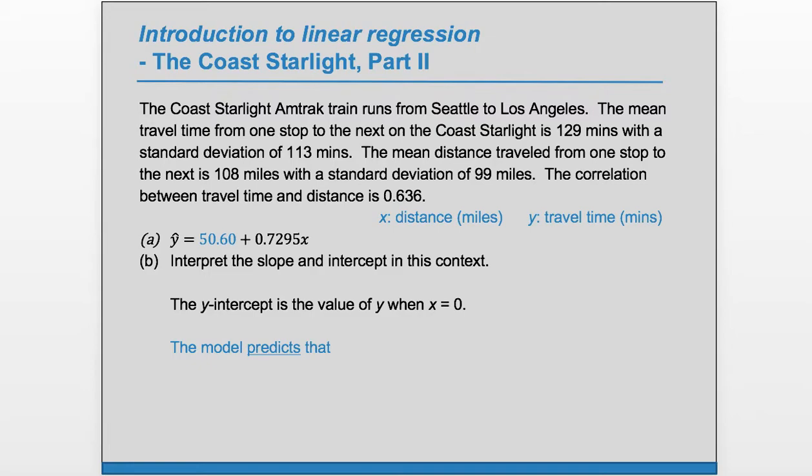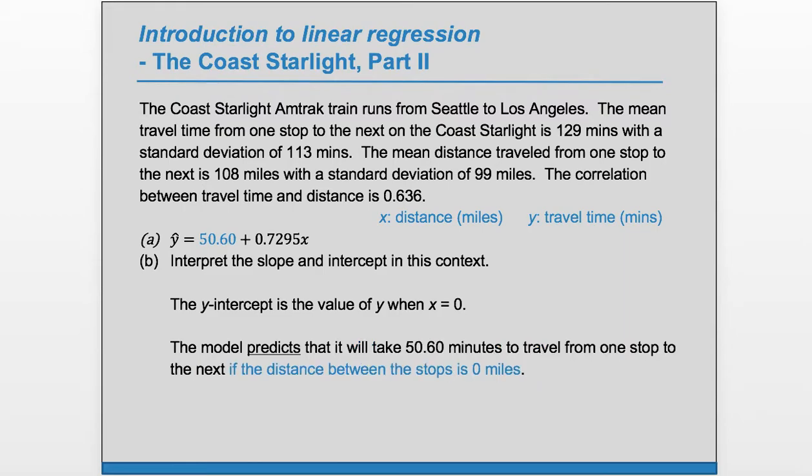So the model predicts that it will take 50.6 minutes to travel from one stop to the next when x is zero, so when the distance between the stops is zero miles.